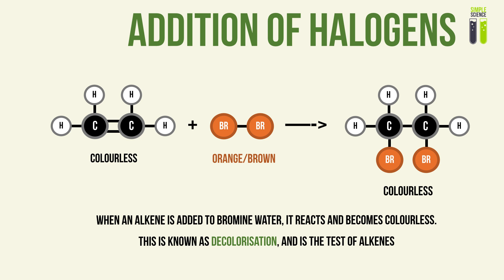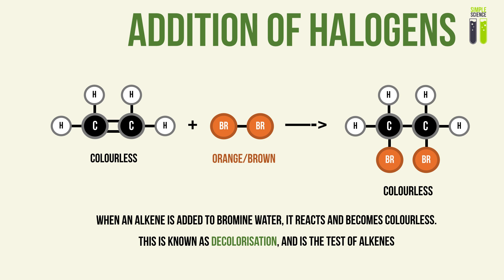When bromine reacts with an alkene, you get a halogenoalkane. In that previous case, the name of the molecule was 1,2-dibromoethane — where 'dibromo' means there are two bromine atoms in the molecule, and 'ethane' represents the main carbon chain of two carbon atoms.